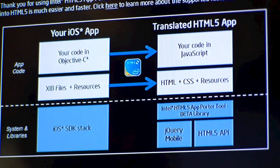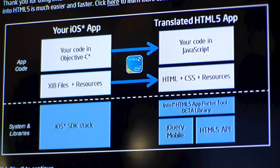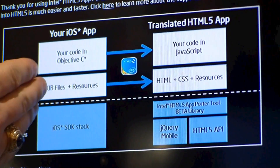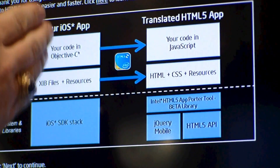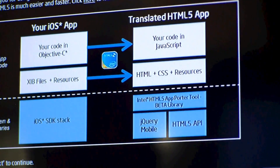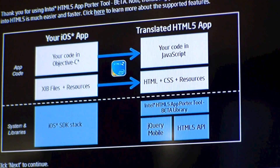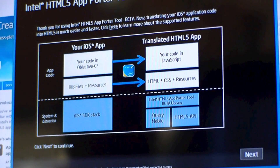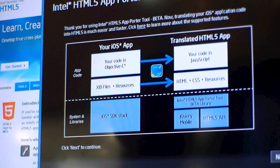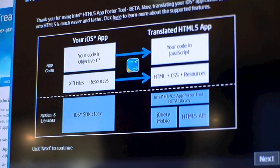This app is a very simple wizard app. You just go through step by step. What it will do, it will take your Objective-C and transfer it into JavaScript. It'll take your GUI and convert it into HTML5 and style sheets. And then for the API calls, it'll leverage jQuery Mobile.